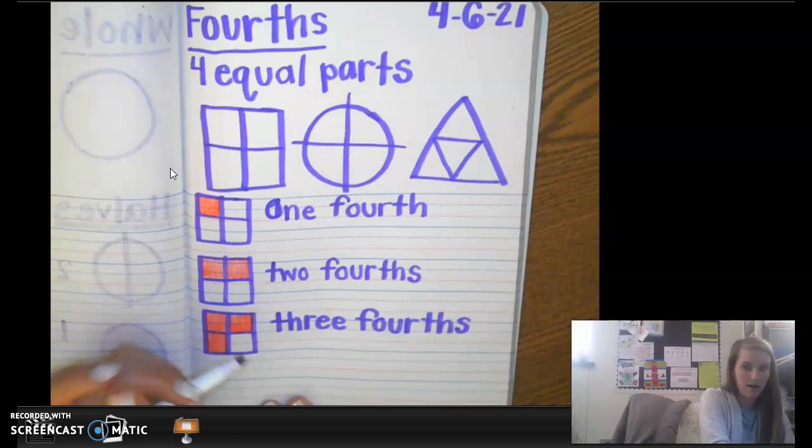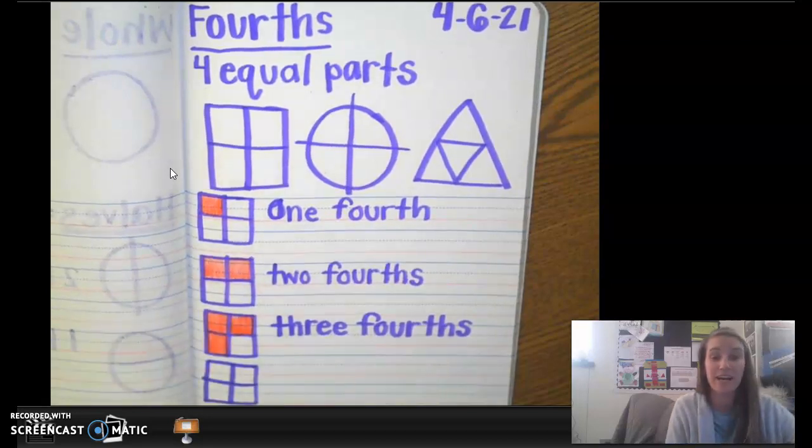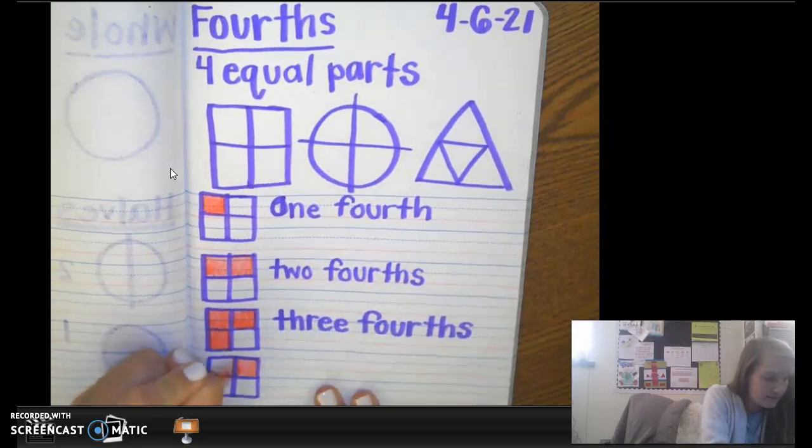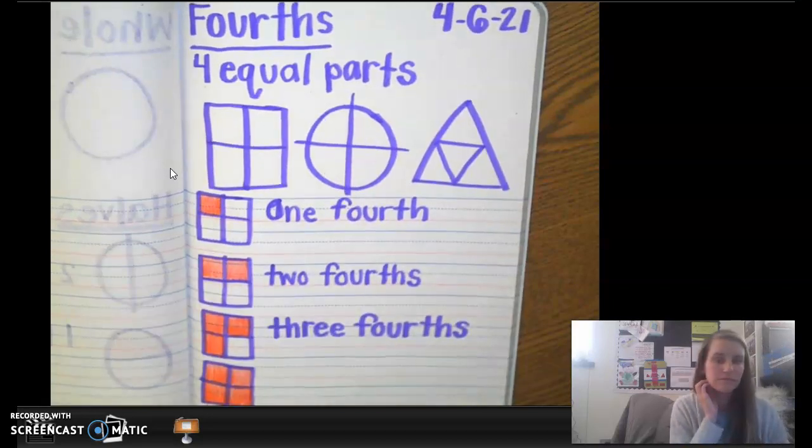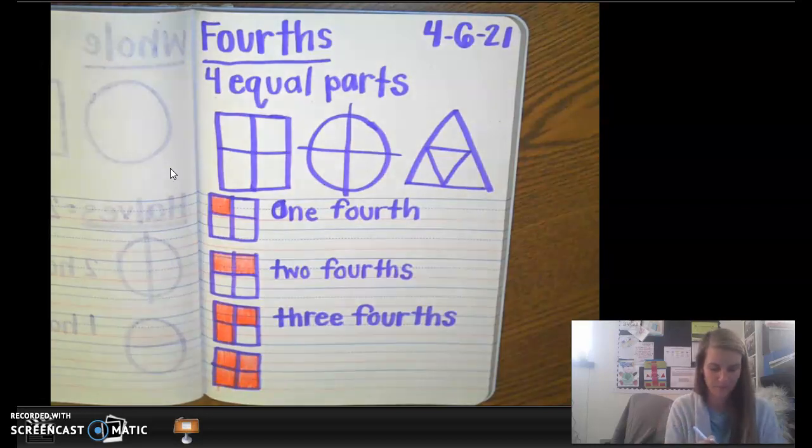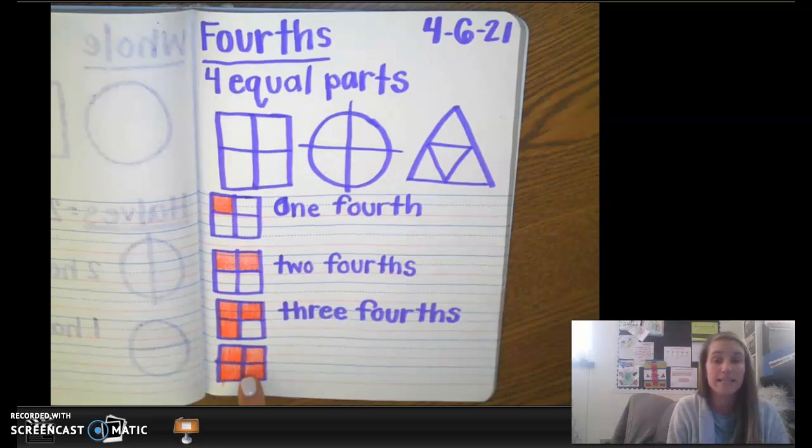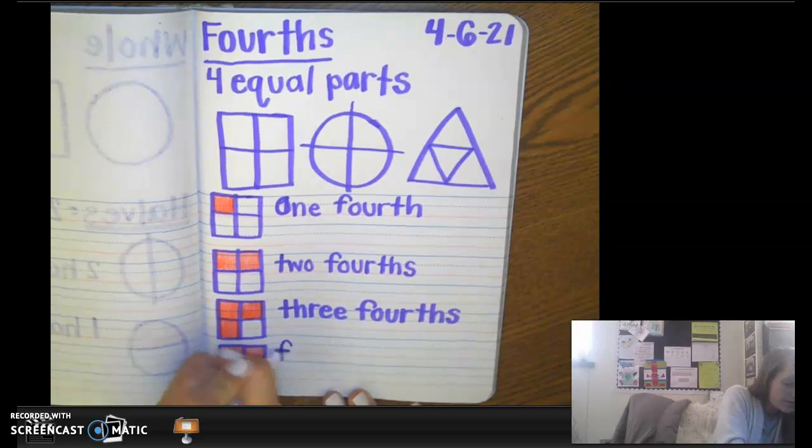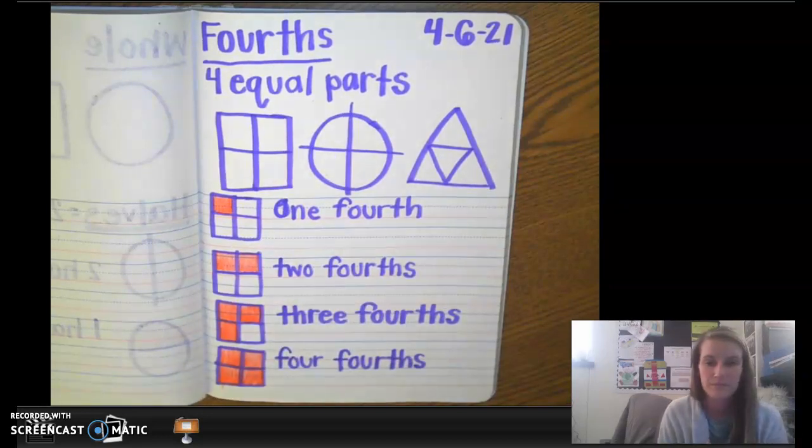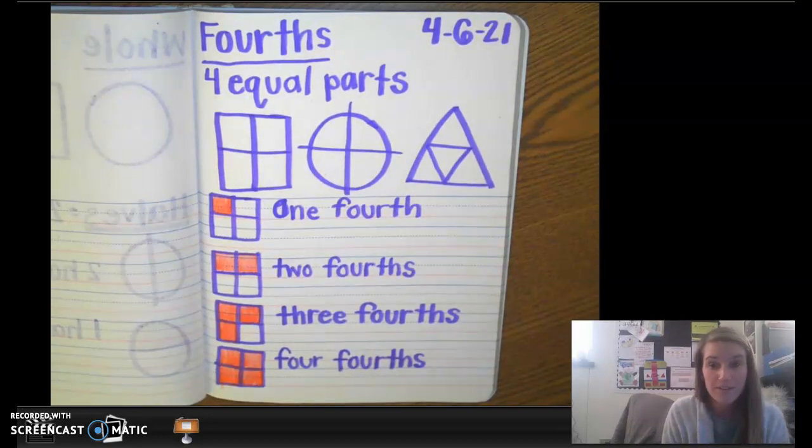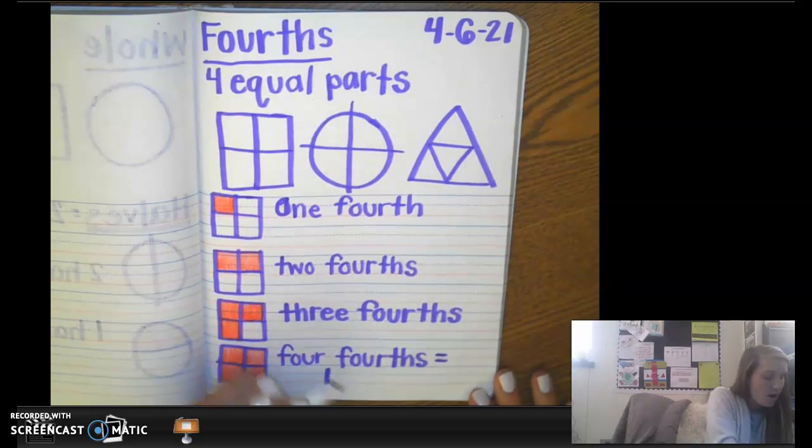And then one more. We're going to draw another square. And now, I want you to color in the whole square, all four parts. And how would I describe this square? One, two, three, four parts is four-fourths. Four-fourths. And if all four of them are filled in, four-fourths is the same as one whole. The whole square is filled in. Four-fourths equals one whole.